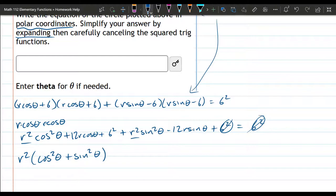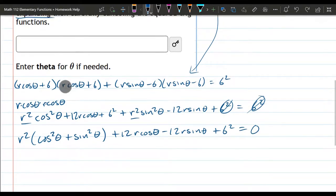And let's write everything else out, plus 12 r cos theta, minus 12 r sin theta. And I'll put the constant 6 squared at the end. And these two canceled out, so that's why there's a zero on the right side.